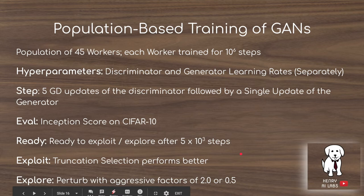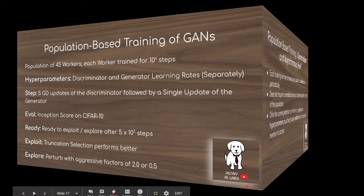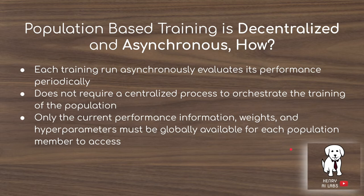Population-based training is decentralized and asynchronous. Each training run can run asynchronously and evaluate its performance periodically. There doesn't need to be a centralized master-slave architecture — all that needs to happen is that there is a globally available dictionary of each model's current performance, weights, and hyperparameters.